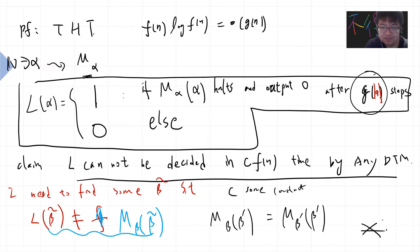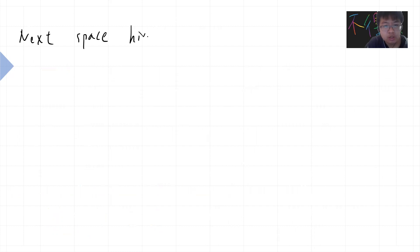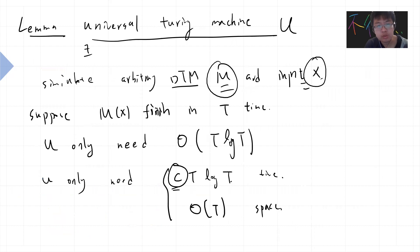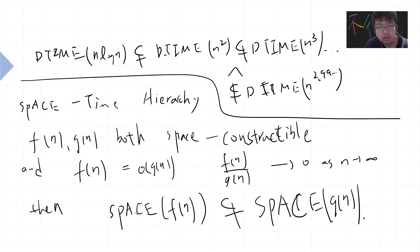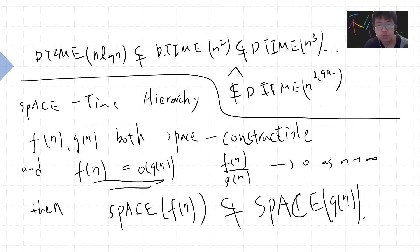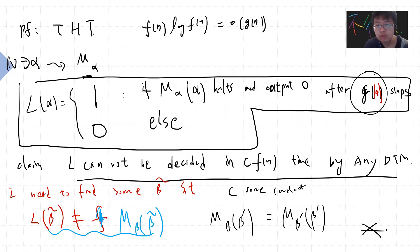The space hierarchy proof is also very simple — just one line. You follow the same proof but replace the universal Turing machine overhead with O(t) space instead of O(t log t) time. This is why in the space hierarchy theorem the condition is just f(n) = o(g(n)) with no log f(n) factor — the universal Turing machine only needs f(n) space, not f(n) log n space. Next time I will prove the non-deterministic time hierarchy theorem. See you guys next video.